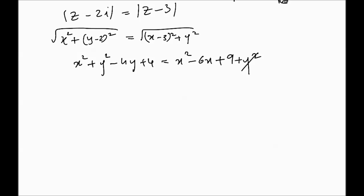The y squared and x squared cancels, and we're left with minus 4y minus 6x equals minus 5, which is the equation of a straight line. We can rewrite this as y equals 6 over 4x minus 5 over 4, which is again the equation of a straight line. This identifies another way to look at loci.